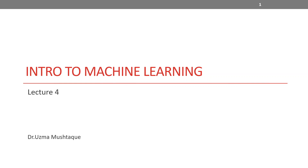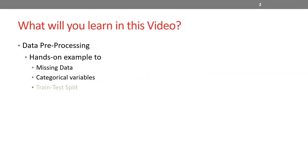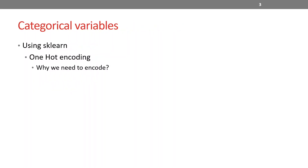Hi everyone. This is Lecture 4. In this video, we'll talk about encoding categorical data when building machine learning models. We are in the process of data pre-processing. We talked about missing data and categorical variables a little bit earlier, but now I'm talking a little bit more about categorical variables and why we need to encode them. We are utilizing a library called scikit-learn, which I introduced in the previous video, and now I will talk about one-hot encoding and why we need to encode.